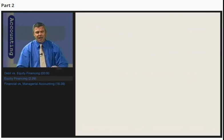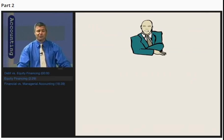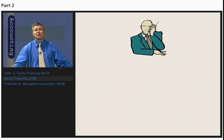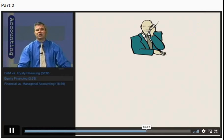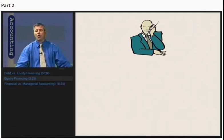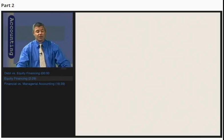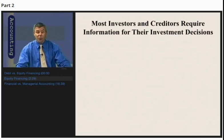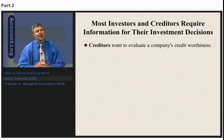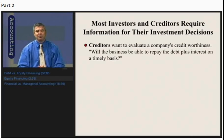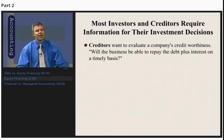Consider the possibility that you've started your own business and need $100,000 of capital. It would be great if you had a rich Uncle Joe who would lend or invest in your business. But most of the time there's no Uncle Joe, and you have to find investors or creditors from the general population. In those cases, investors and creditors are not going to loan you money just because you're a nice person — they want to make an informed and intelligent investment decision. Creditors want to evaluate a company's creditworthiness: will this business be able to repay the debt plus interest on a timely basis? Equity investors want information to evaluate the profit potential of an investment in your company.